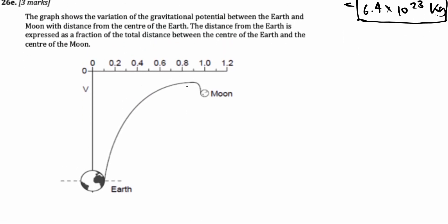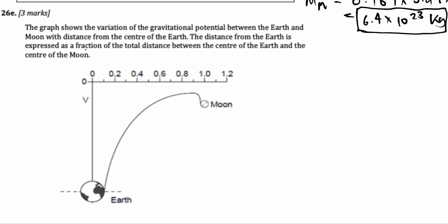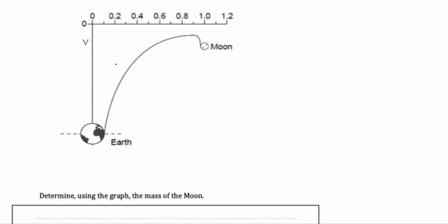Next question, again, three marks. The graph shows the variation of gravitational potential between Earth and the Moon with the distance from the center of the Earth. The distance from the Earth is expressed as a fraction of the total distance between the center of the Earth and the center of the Moon. Okay, so what do they want us to find? Determine using the graph the mass of the Moon. Now, how do we do this? This is a gravitational potential distance graph.